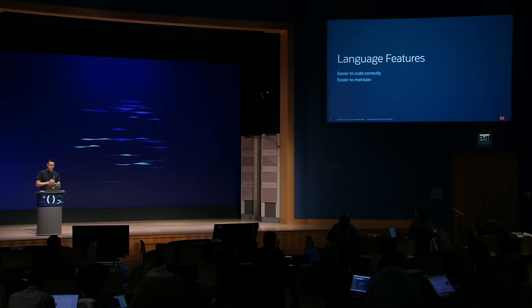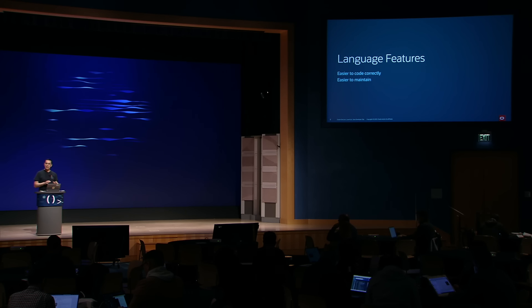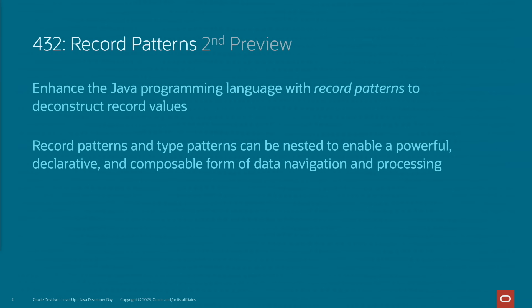We always start with the language features because these are the ones that are most likely to impact the largest number of developers, and they're also the most fun to showcase. JDK 20 brings back a second preview for record patterns, which makes it much easier to deconstruct records and operate on their components. Record patterns can be nested to access data at any level of the record hierarchy.